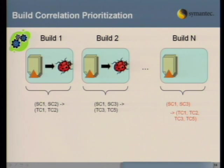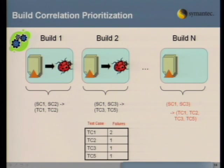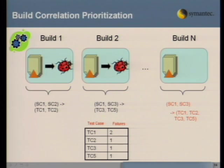Since the build history method only accumulates test cases over time, you'll want to put in some kind of prioritization. A simple approach is frequency — over the build history, the test case that has failed more times is probably a better test case to run. Other prioritization techniques include weighting and recent failures. It really depends on your context, whatever works best for you.